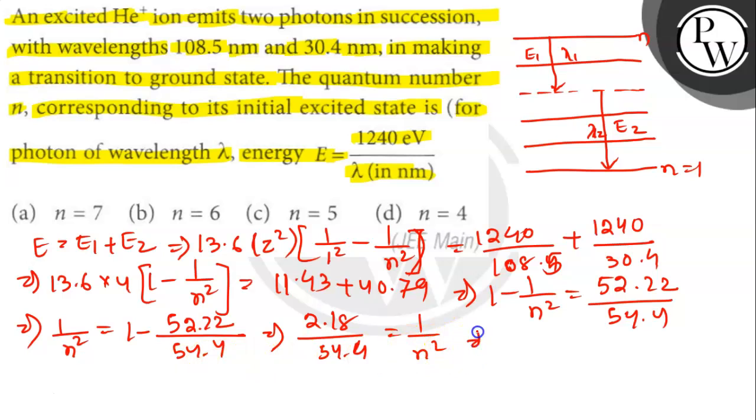So here n square will be 54.4 divided by 2.18. So n square is 25. n equals to 5.